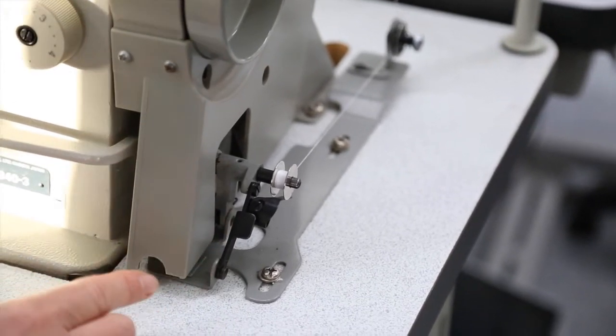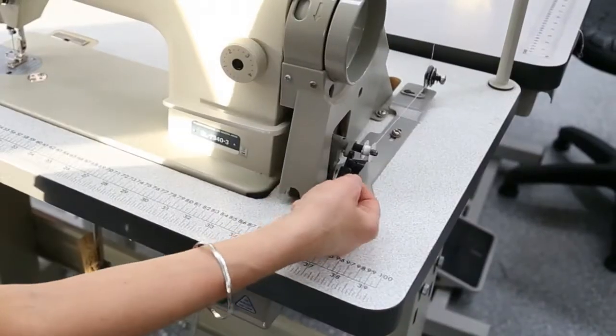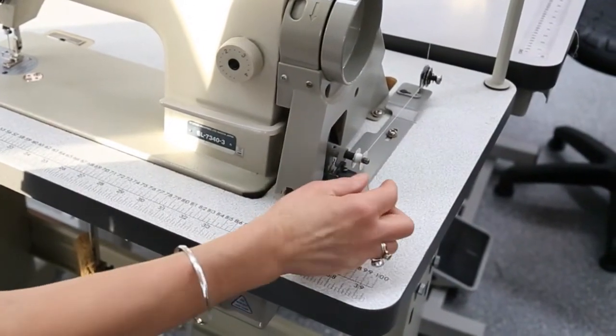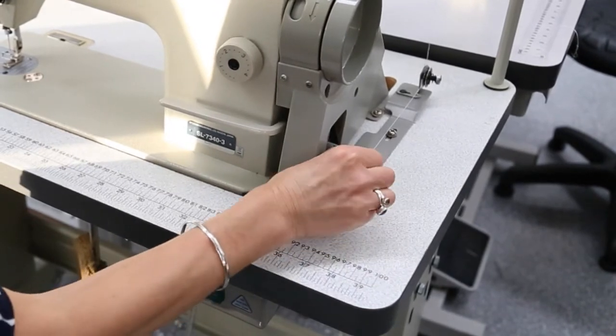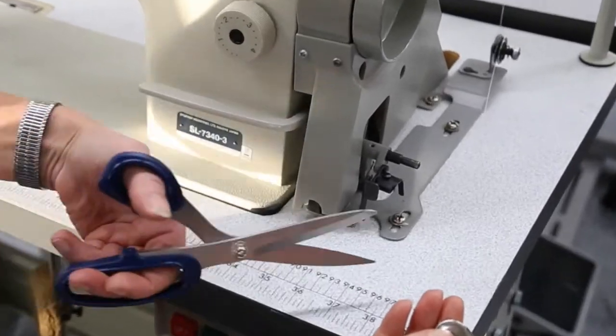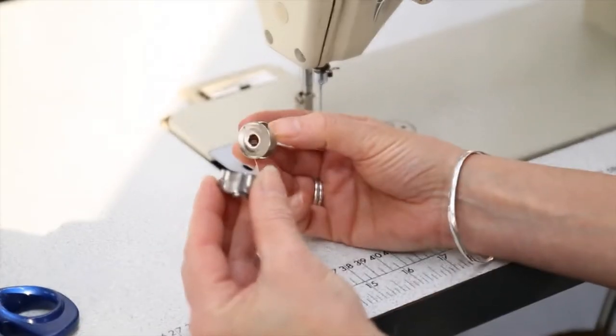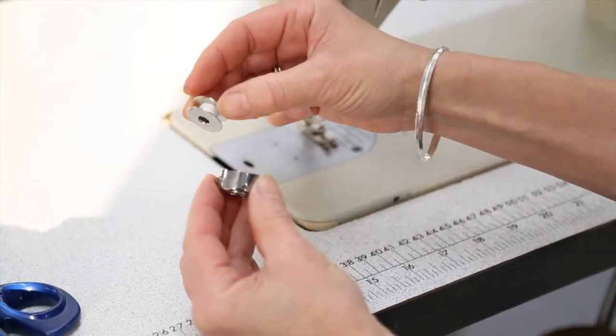When we've finished winding the bobbin we must turn off the machine. Now we can bring the lever forward and then remove the bobbin, and now we're going to put the bobbin into the bobbin case.